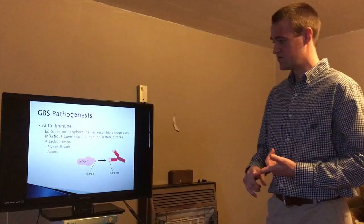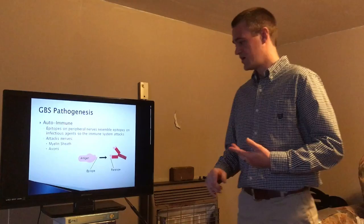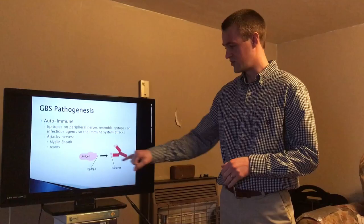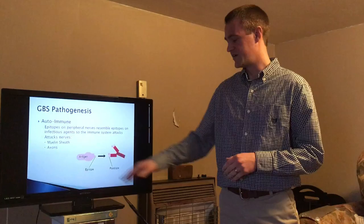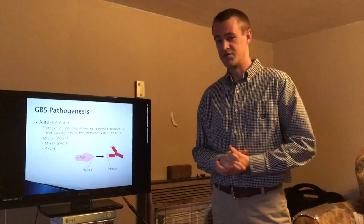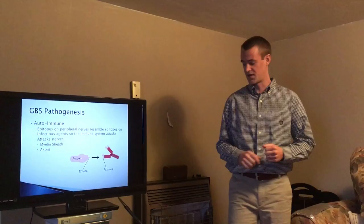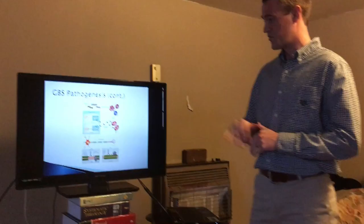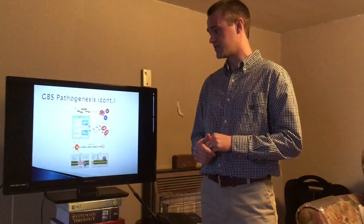Regarding pathogenesis, it is an autoimmune condition. The epitopes on peripheral nerve antigens resemble epitopes found on infectious agents, so the immune system attacks them erroneously. As shown in the diagram, the end of the antigen pairs with the epitope on the antibody, and because it resembles something infectious, the immune system attacks it — either the myelin sheath or the axons, depending on the subtype.